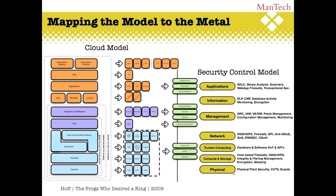This is an older diagram from 2009, but it provides what we call mapping the model to the metal. We take the different trust boundary layers and identify what is actually happening to each one. For example, when we talk about the infrastructure service facilities trust boundary, we're talking about power, cooling, and space — and physically protecting the facility with CCTV, closed circuit television, and guards.